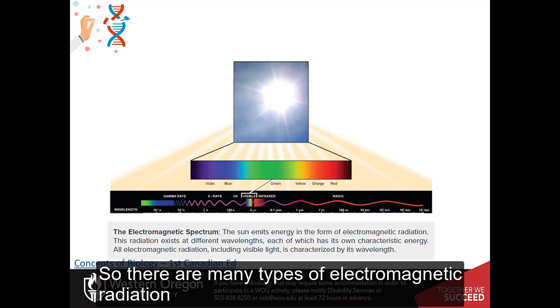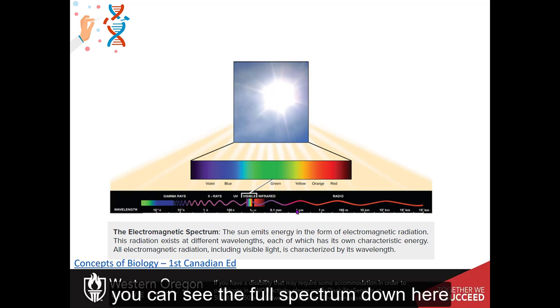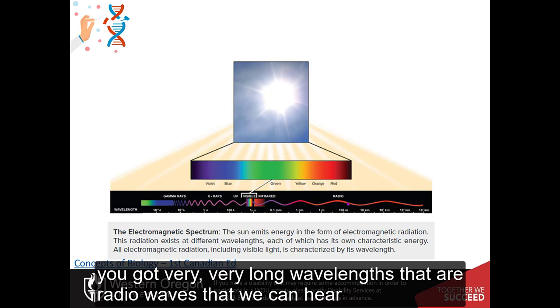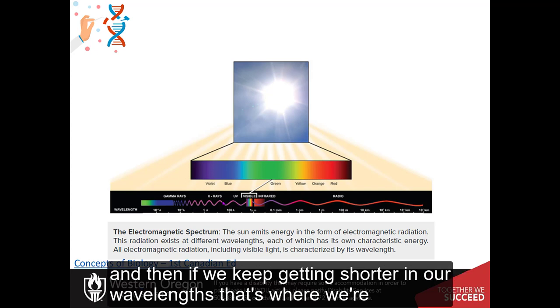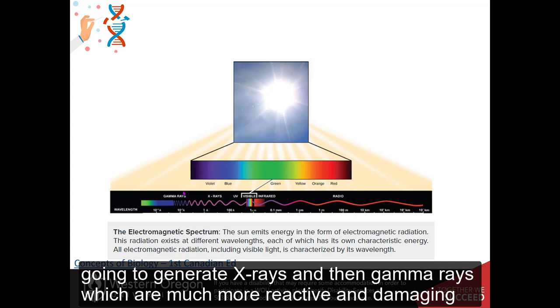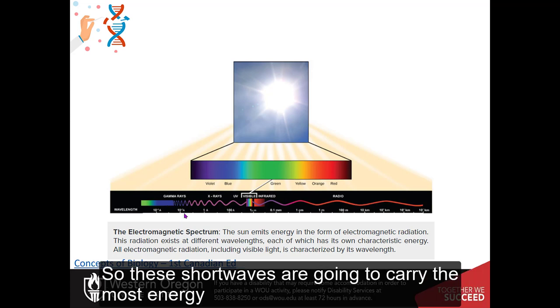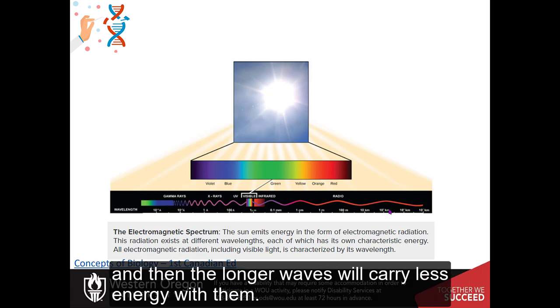So there are many types of electromagnetic radiation. You can see the full spectrum down here. You've got very, very long wavelengths that are radio waves that we can hear. We have the full visible spectrum, the infrared area, the UV or ultraviolet area. And then as we keep getting shorter in our wavelengths, that's where we're going to generate x-rays and then gamma rays, which are much more reactive and damaging. So these short waves are going to carry the most energy, and then the longer waves will carry less energy with them.